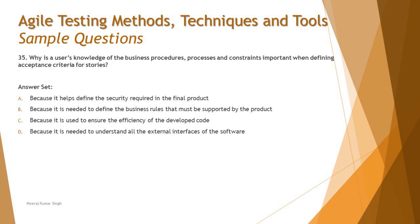Option B says: because it is needed to define the business rules that must be supported by the product. This makes sense — a user story and its acceptance criteria should reflect what the product must do from a business, end-user, and customer perspective.